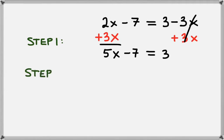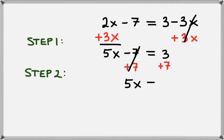So the next step, we already know, is to get the x term by itself. To do that, we'll add 7 to both sides. On the left hand side, the minus 7 and the 7 cancel, which leaves us just with 5x. And on the right side, we have 3 plus 7, which leaves us with 10.